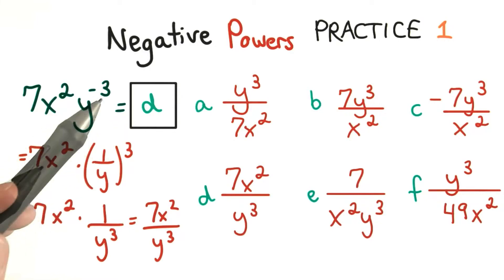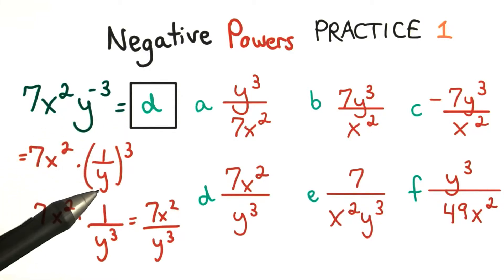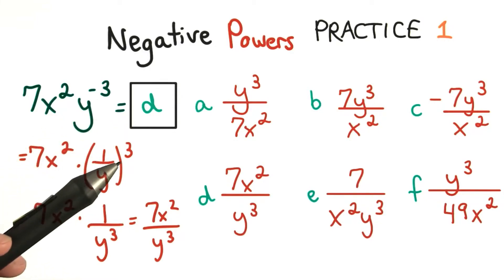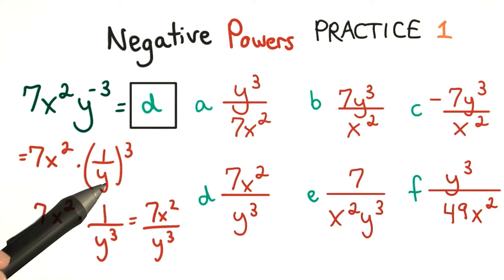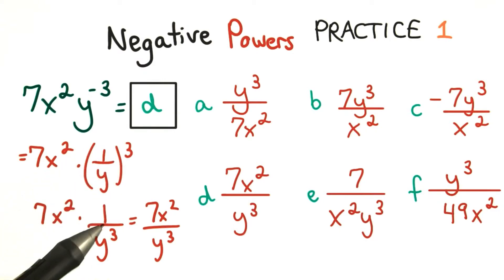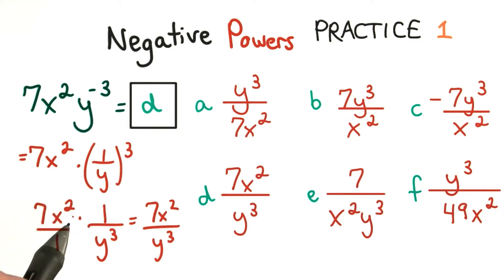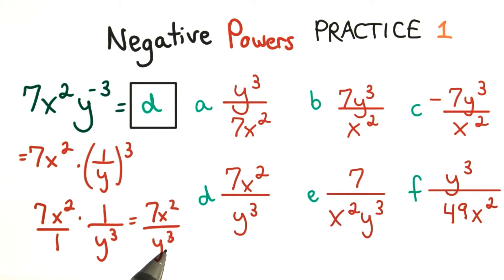This one would be d. For a negative exponent, we take the reciprocal of the base and raise it to a positive power. We know 1 divided by y cubed is the same as 1 divided by y cubed. Next, we multiply our numerators and denominators together to get 7x squared divided by y cubed.